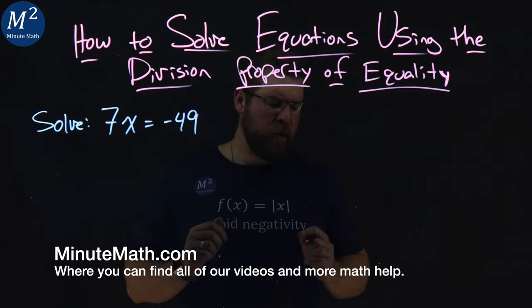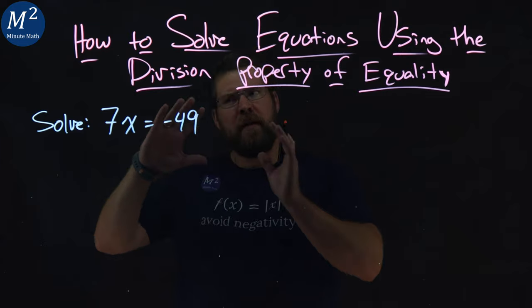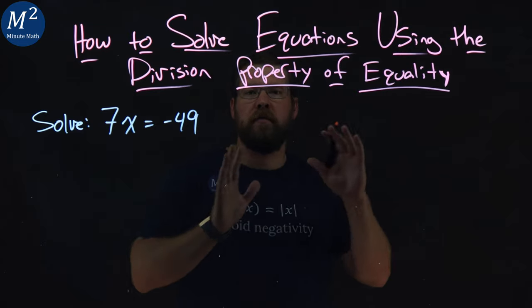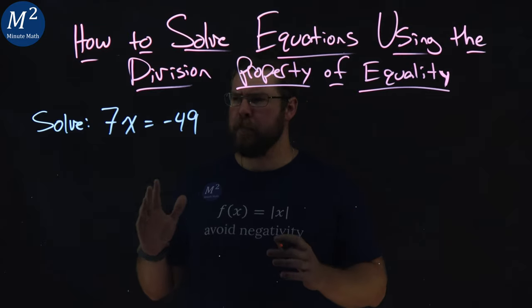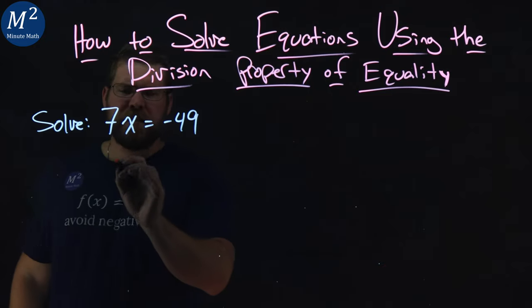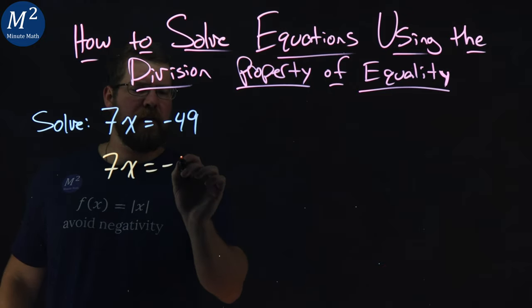The division property of equality tells us that we can divide by the same number to both sides of the equation. How does it help us? Well, 7x equals negative 49.